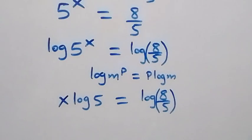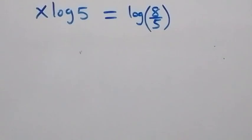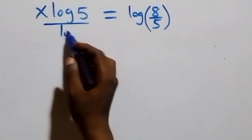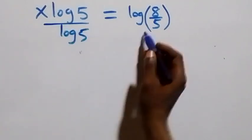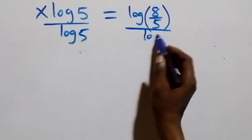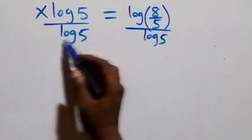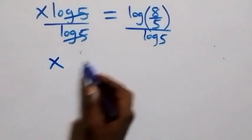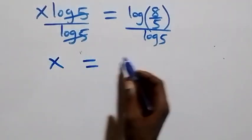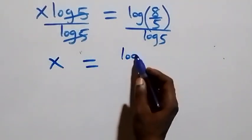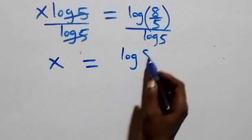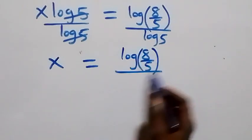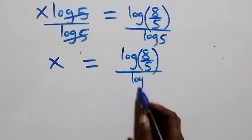We divide both sides by log 5. Log 5 cancels on the left, giving x equals log(8/5) divided by log 5.